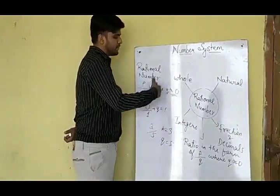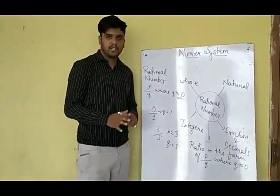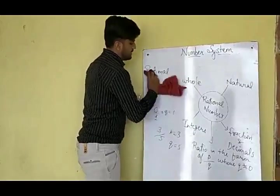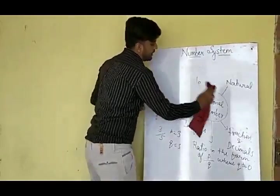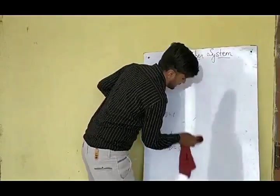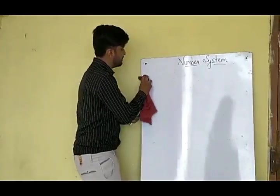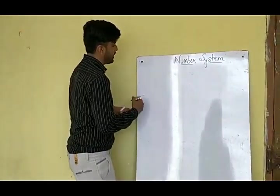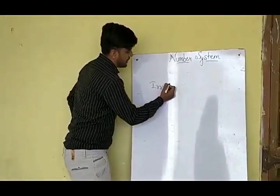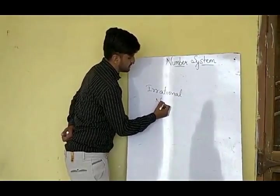I hope it is clear what a rational number is. Now, there are numbers other than rational numbers — and those numbers are called irrational numbers. Numbers other than rational numbers are called irrational numbers.